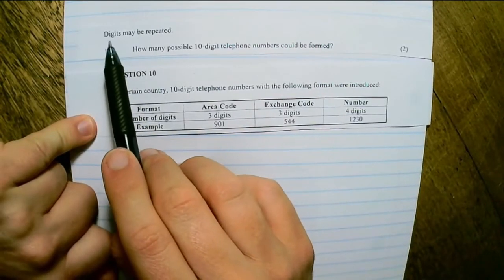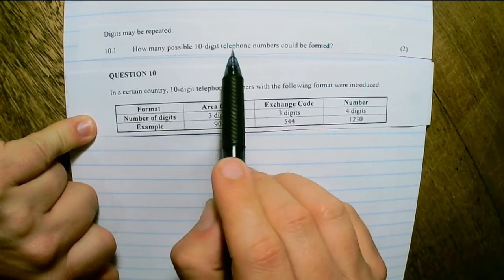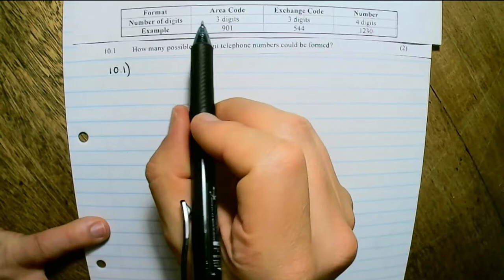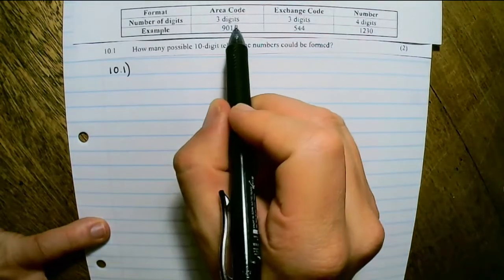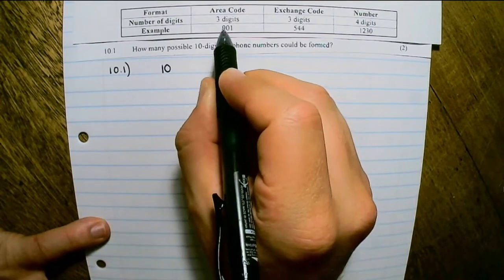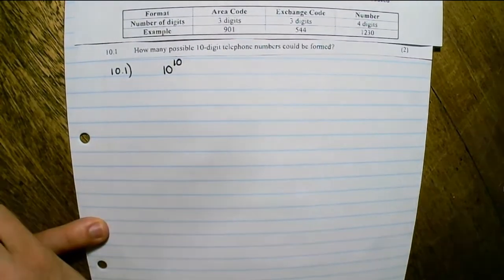Digits may be repeated. How many possible 10-digit telephone numbers could be formed? A telephone number consists of 10 digits and there are 10 possible digits, so it's 10 to the power of 10.